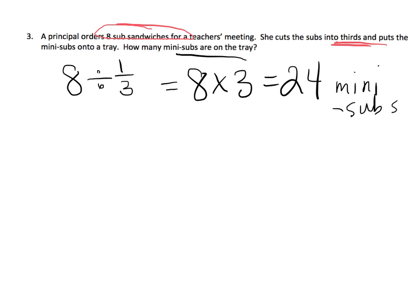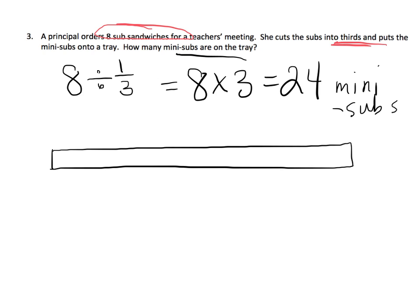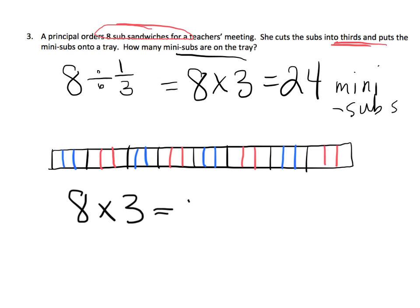Now let's draw the picture. We're going to begin by drawing 8 whole sub sandwiches — there are our 8 whole sub sandwiches. And she cuts each one of these whole sub sandwiches into thirds: 1, 2, 3 — doing this for each of the 8 sandwiches. How many thirds did we get? There were 8 wholes, and each whole got cut into 3 pieces. So 8 times 3 is 24.